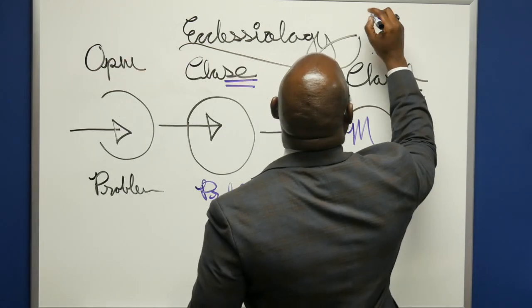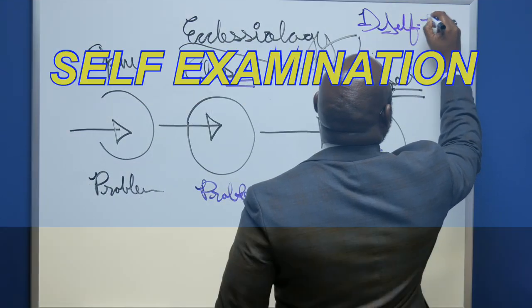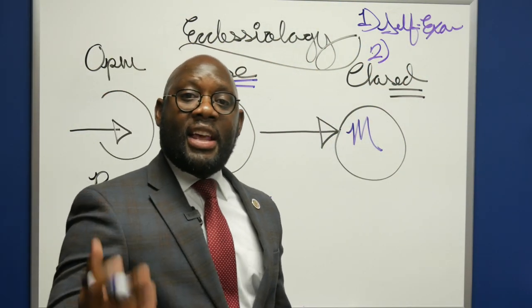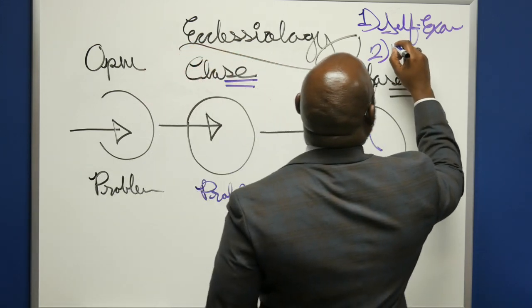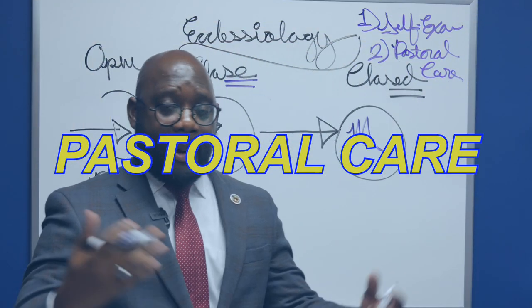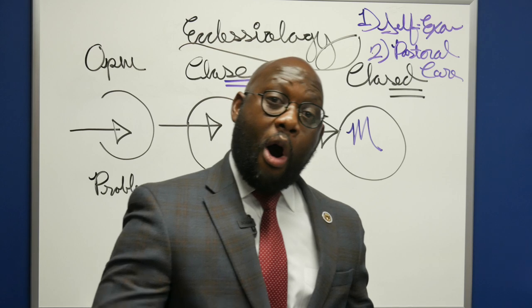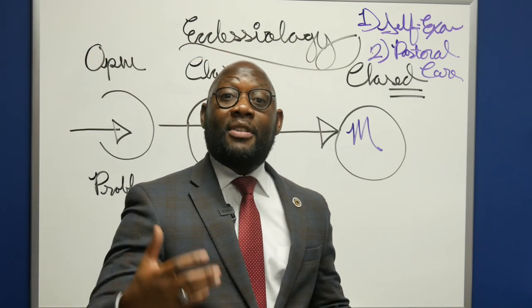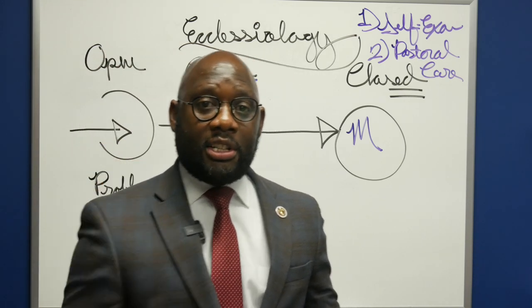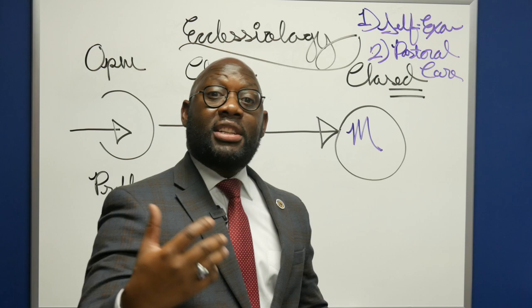I believe the closed position is the strongest because it causes the individual to observe 1 Corinthians 11:28 through self-examination. It is also the strongest because it gives to the pastors and elders the greatest opportunity for shepherding and pastoral care. The pastors and elders have the responsibility of fencing off the table from members not walking in light of the profession they have made. If there is some known sin or an individual is under church discipline, they would be able to keep that individual from drinking judgment to themselves.